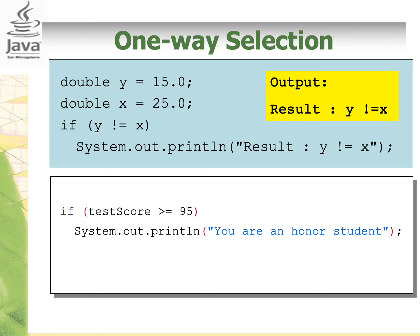Let's look at this code. Say that we have double y equal to 15.0 and double x equal to 25.0. Then we have our if statement where the expression is true if y is not equal to x. Here, we are comparing the value of y and x: 15 is not equal to 25, so this expression is true. When it is true, it will execute the print line statement and display 'y not equal to x'.